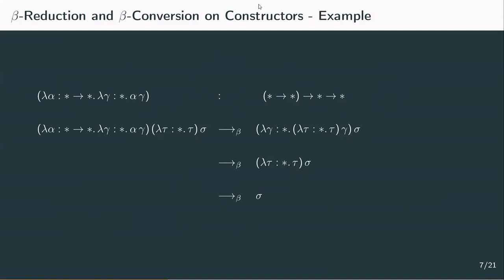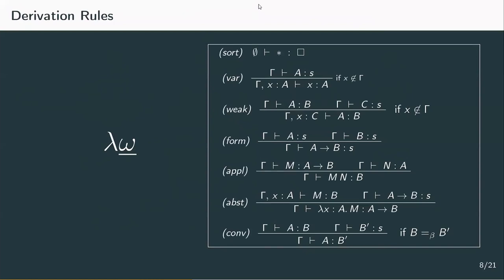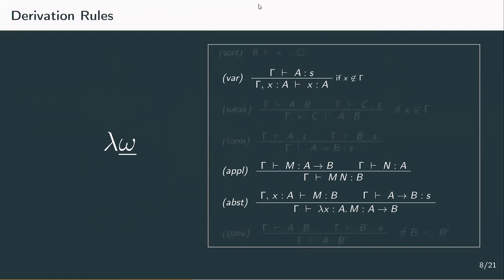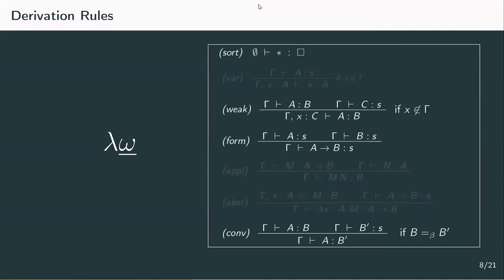Finally, we're going to discuss derivation rules for the system lambda weak omega. Some are variations of rules from the simply typed calculus and lambda 2, while others are completely new. The variable rule, application, and abstraction rules are already known from the simply typed lambda calculus and lambda 2. They've changed very slightly due to the sorts in the new system. The sort rule, weakening rule, and conversion rule are all new. To get a good grasp of the system, we're going to go over all of these rules one by one.